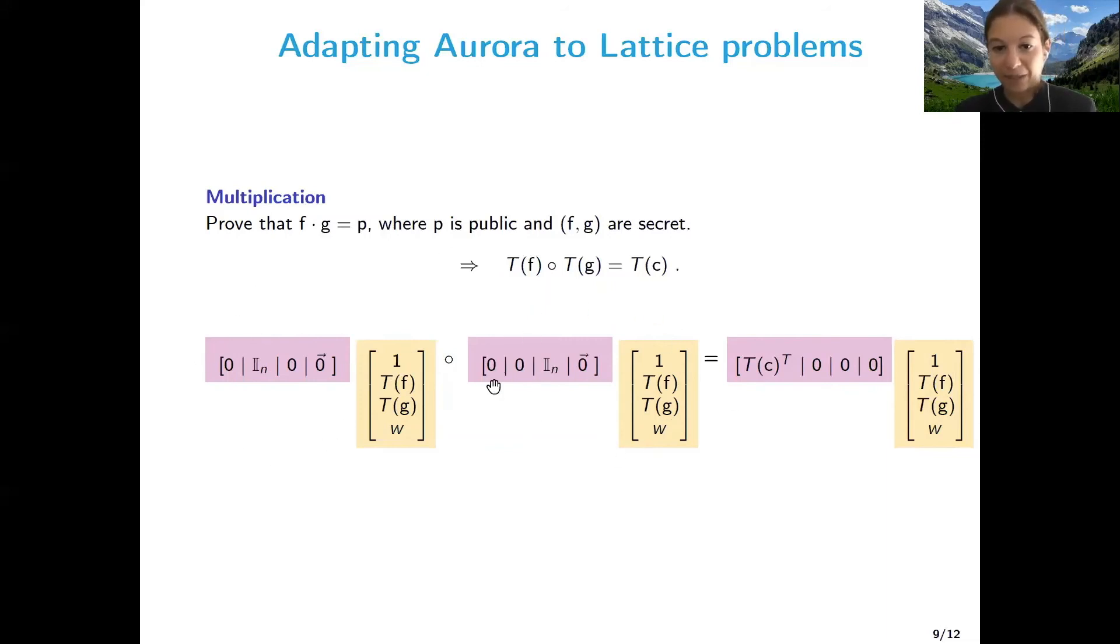Now on the other side, on the right hand side of the component-wise multiplication, we're going to do the same but with respect to G. So we're going to set the matrix B equal to zero in every component that multiplies the element one or the representation of F in the secret vector, and then put the identity in the part that multiplies G and zero in the part that multiplies W. So now we have on the left hand side of the component-wise multiplication the representation of F, and on the right hand side the representation of G. And this has to be equal to the representation of P. And to do that, we just set the matrix C as having in the first column the NTT representation of P so that this gets multiplied by one and zero in the rest.